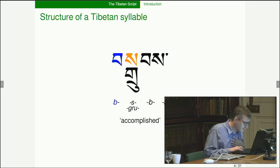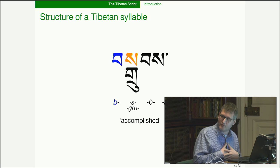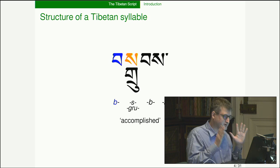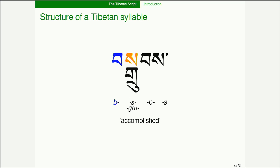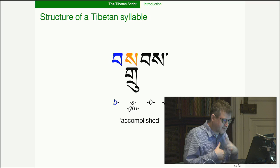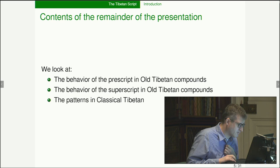Here's a Tibetan syllable: 'Drup,' which means 'accomplished.' Consonants that come after the vowel are on the right, the vowel is in the middle, and most consonants that come before the vowel are also in the middle — but then for some reason this 'b' is on the left. As a convention throughout, I've put the prescript in blue and the superscript in orange.